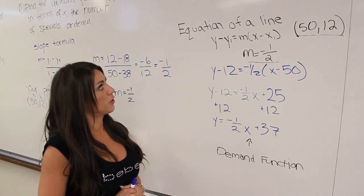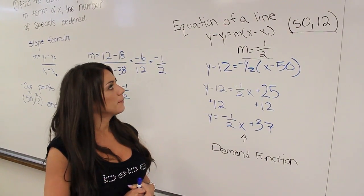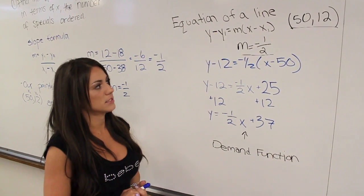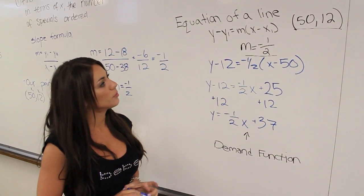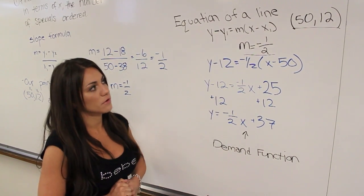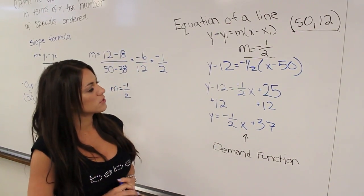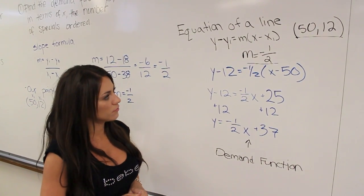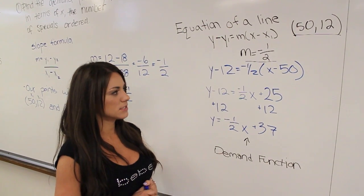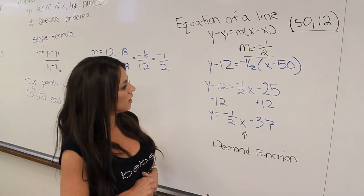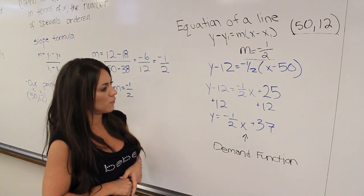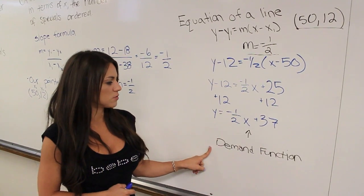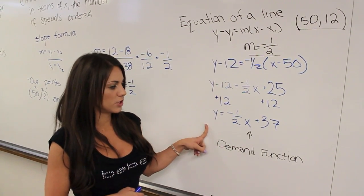Now that we have our slope, we're going to find an equation of the line, which is Y minus Y1 equals M times (X minus X1). Our slope is negative 1 half, and we're going to use the point (50, 12). Plugging those numbers in, we get Y minus 12 equals negative 1 half times (X minus 50). Once we distribute the negative 1 half and add 12 to both sides, we have our demand function: Y equals negative 1 half X plus 37.